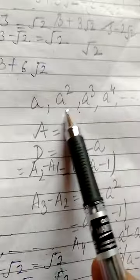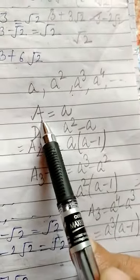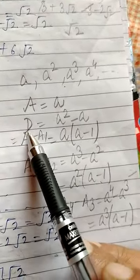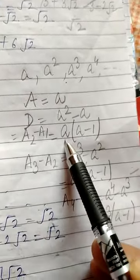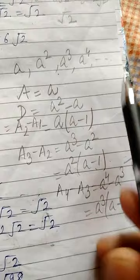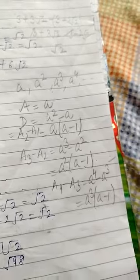Next question: a, a², a³, a⁴. We denote first term as capital A. Common difference D: A² − A = A(A−1); A³ − A² = A²(A−1); A⁴ − A³ = A³(A−1). In each case the common difference is different, so it does not form an AP.